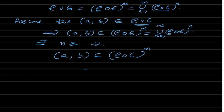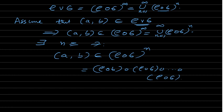So what does this actually mean? Rho composition sigma, composed n times. If you unpack it, you find there exist elements A, x1, x2, and so on, such that A x1 belongs to rho and x1 x2 belongs to sigma.